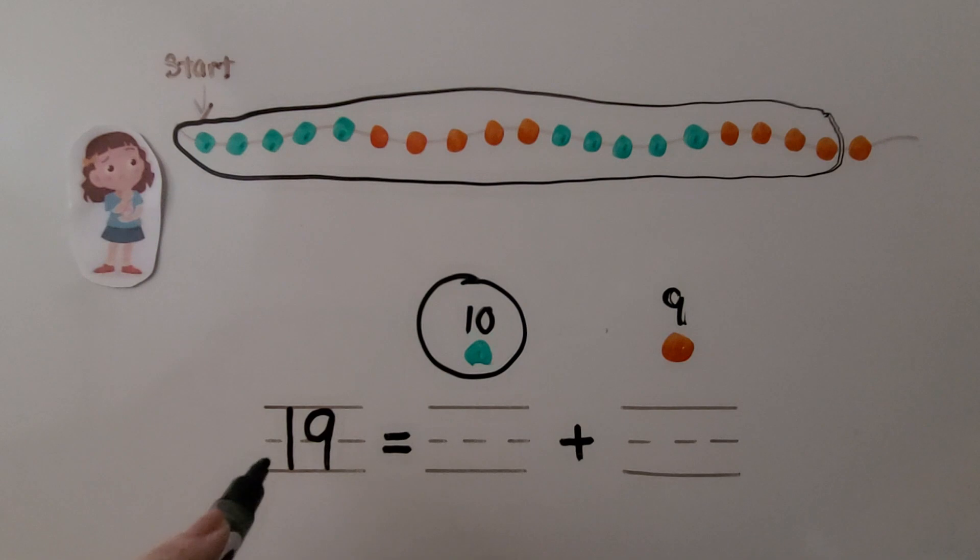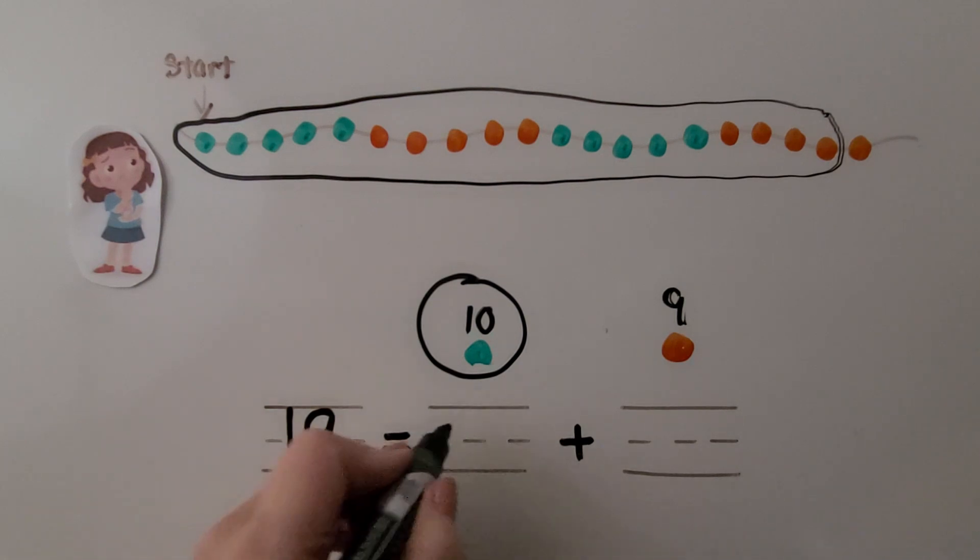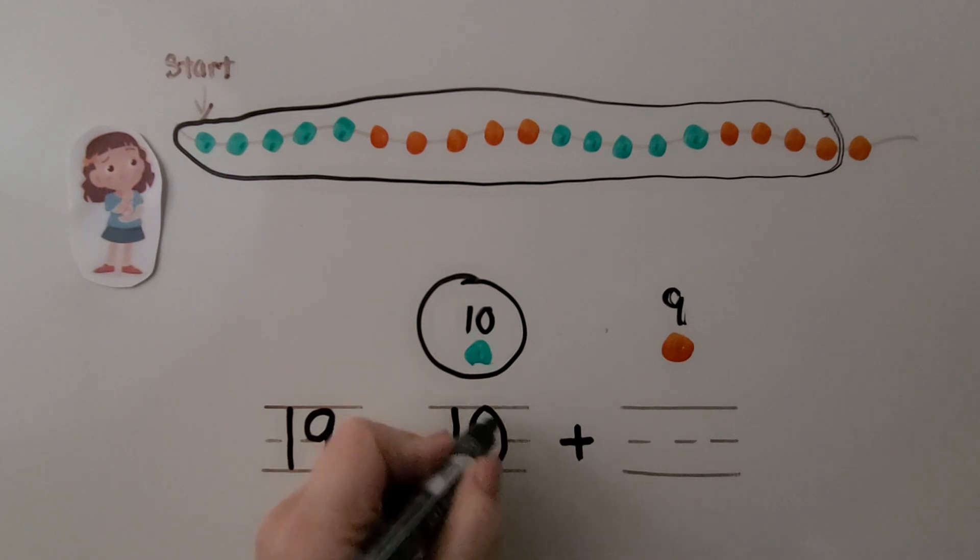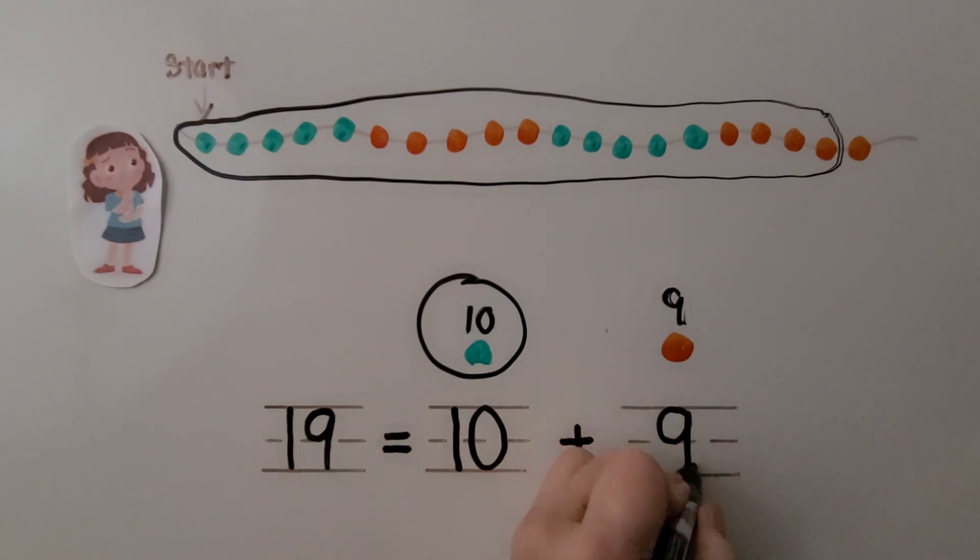We complete 19 beads. 19 is equal to 10 plus 9. We complete an addition sentence to match the number of beads.